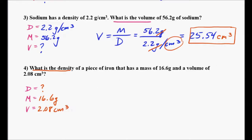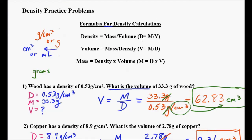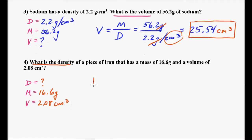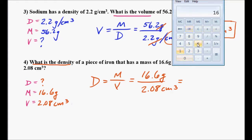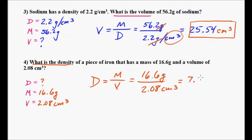Looking at the formulas, density equals mass divided by volume. I'm going to write that formula and substitute: 16.6 grams divided by 2.08 cubic centimeters. Using the calculator, 16.6 divided by 2.08 equals 7.98 grams per cubic centimeter. How do I know the units? Nothing cancels out — I have grams over cubic centimeters, so that transfers directly as my units.